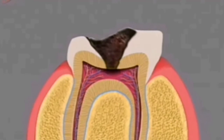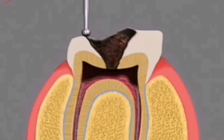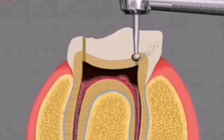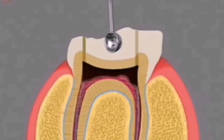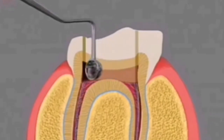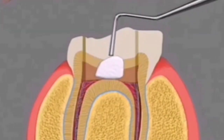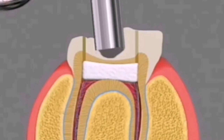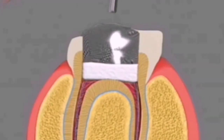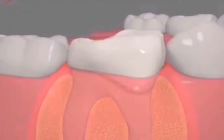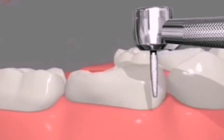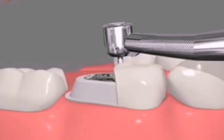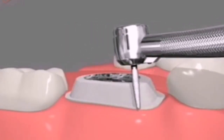We perform pulpotomy when the carious lesion is seen in the coronal region. First, using a burr, we remove that carious lesion entirely from the coronal portion. We clean it out and then using a spoon excavator, we scoop out the entire coronal pulp — only the coronal region; we do not touch the radicular pulp. Then we place a sedative dressing, a temporary dressing. In later visits, we replace that with a permanent filling. And then if the tooth is completely asymptomatic, we prepare it for a crown and place a prefabricated crown on the tooth.